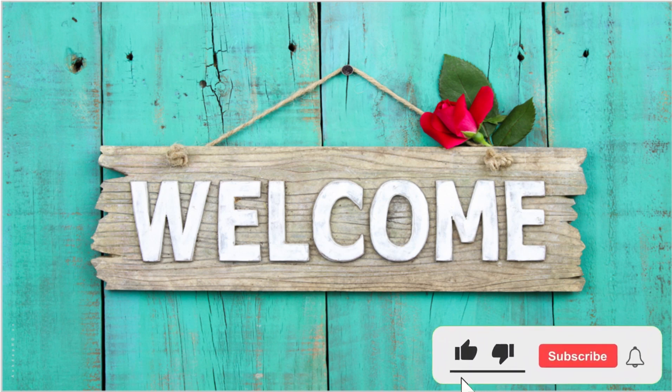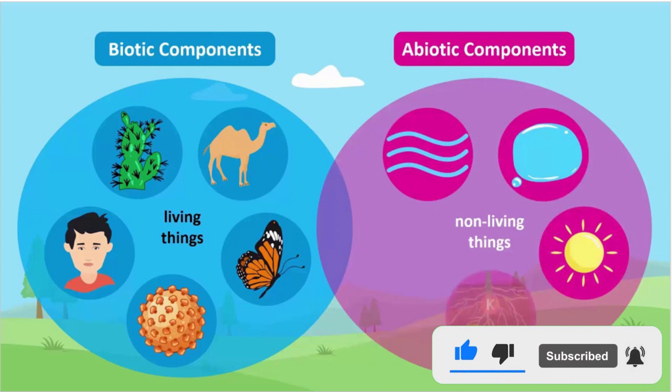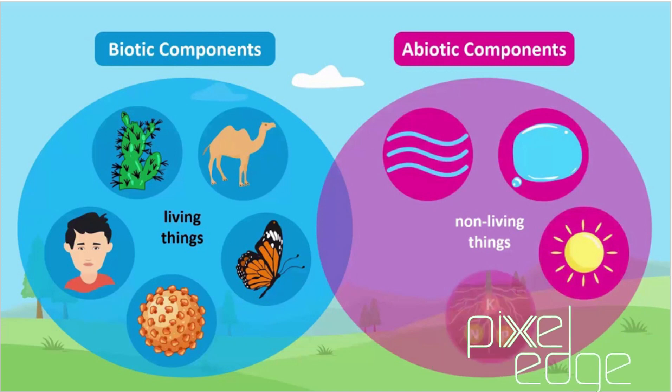Assalamu alaikum, welcome to our channel, easy and amazing. Students, if we look at our surroundings, we will find different things present in it. For example, we see there are plants, animals, water, minerals, soil, rocks, sunlight, climate, and many other things present in our surrounding. These things are called as components of ecosystem.